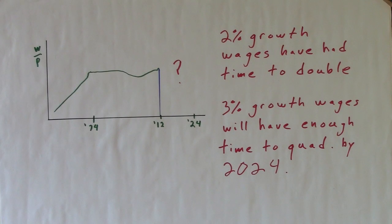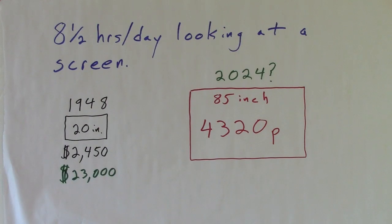American wages have had enough time to double since 1974 with 2% growth. They will have had enough time to quadruple by 2024 with 3% growth. Imagine it's 2024. An economics professor that was born after 1990 would have to tell his 21st century students that technology has had no impact on our lives in 50 years, which will be implied by the standard model. RIDICULOUS!